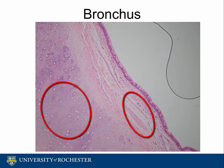It is the bronchi that branch into smaller structures called bronchioles, eventually evolving into the air sacs called alveoli, which are the sites of oxygen and carbon dioxide exchange in the respiratory system.